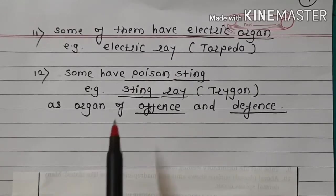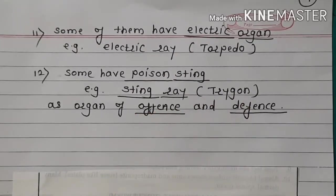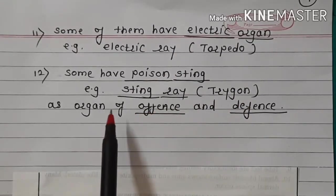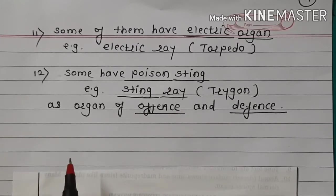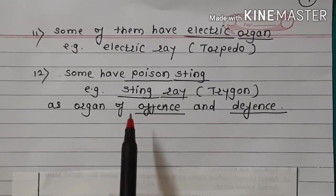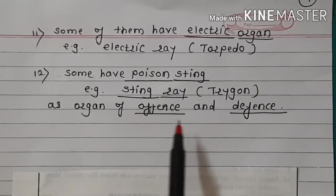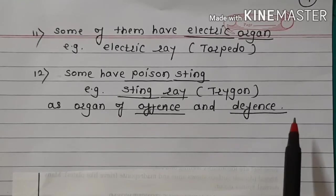Some have a poisonous sting — example, Sting Ray. This acts as an organ of offense and defense.